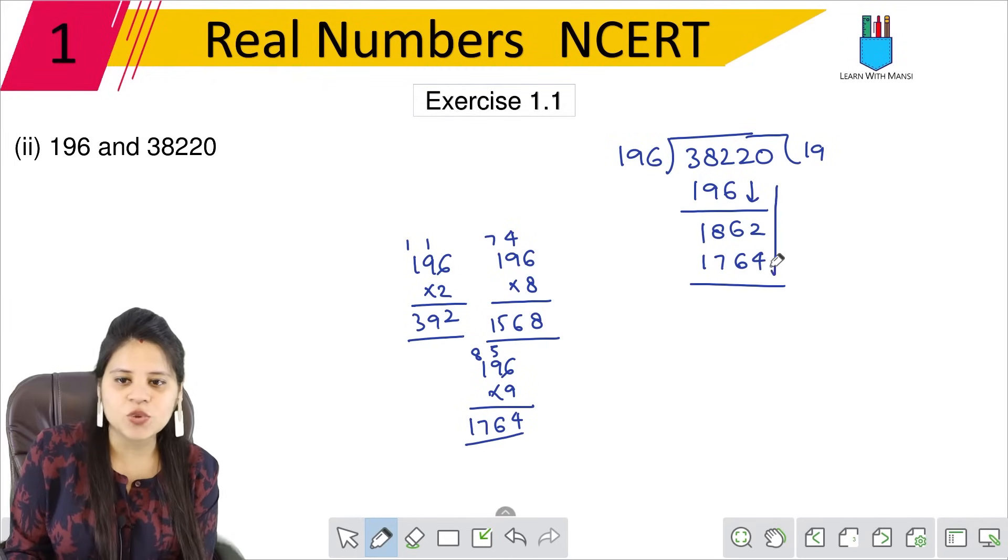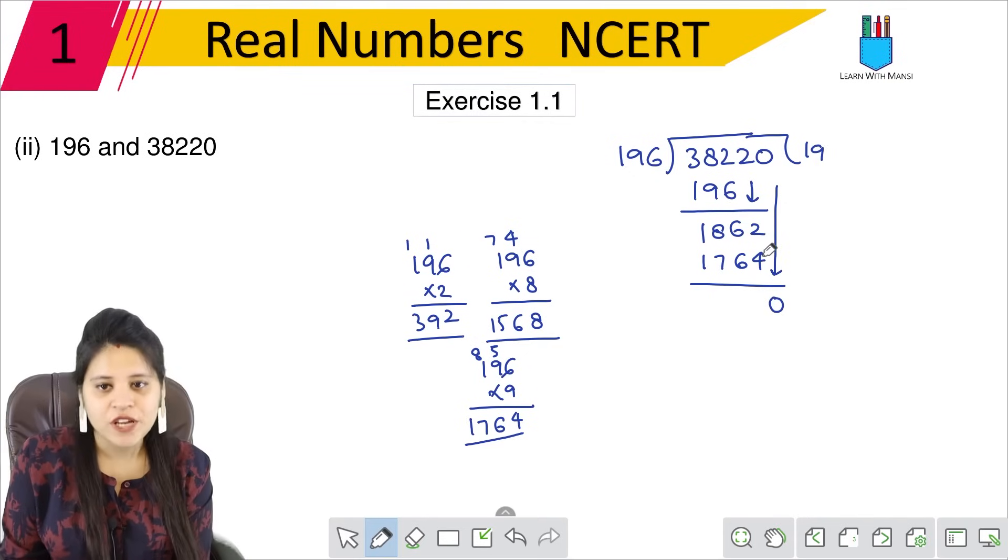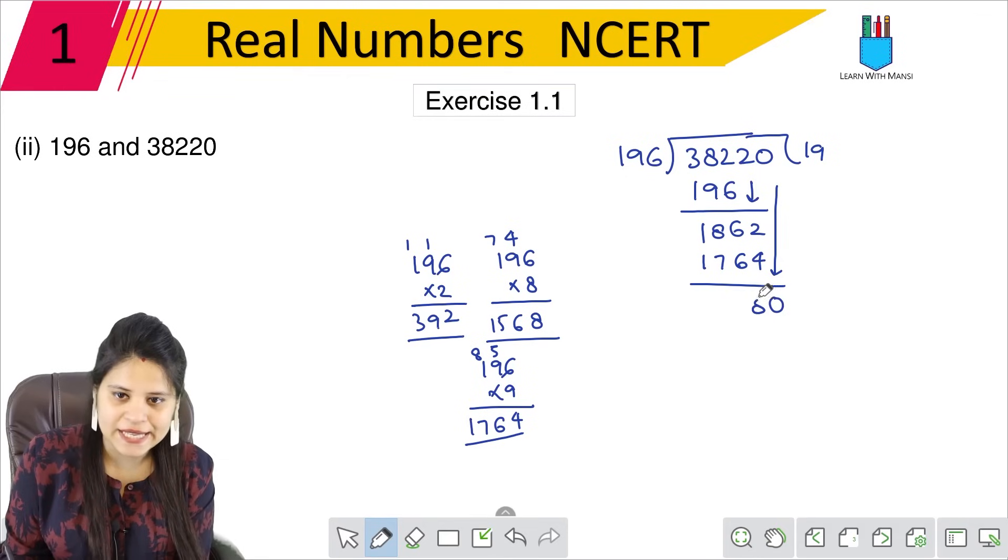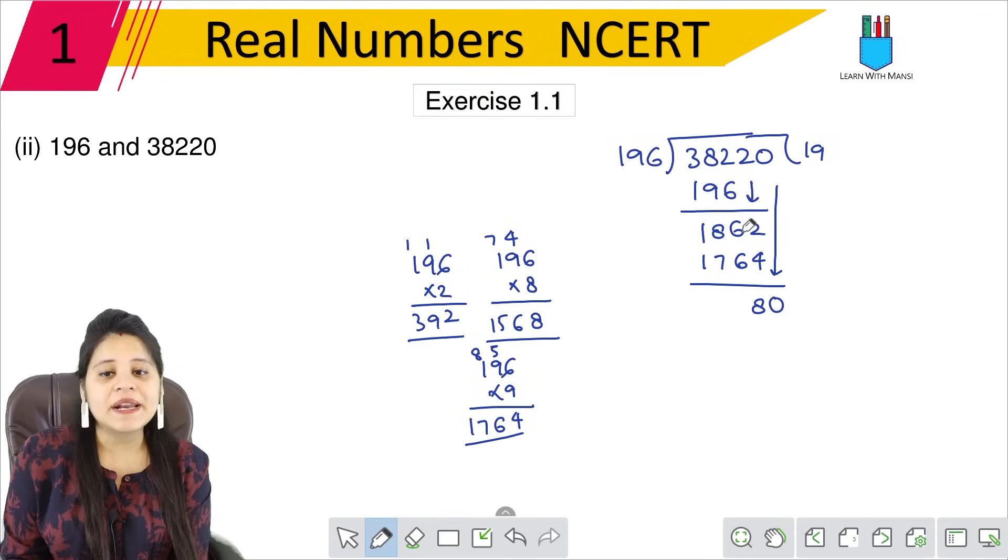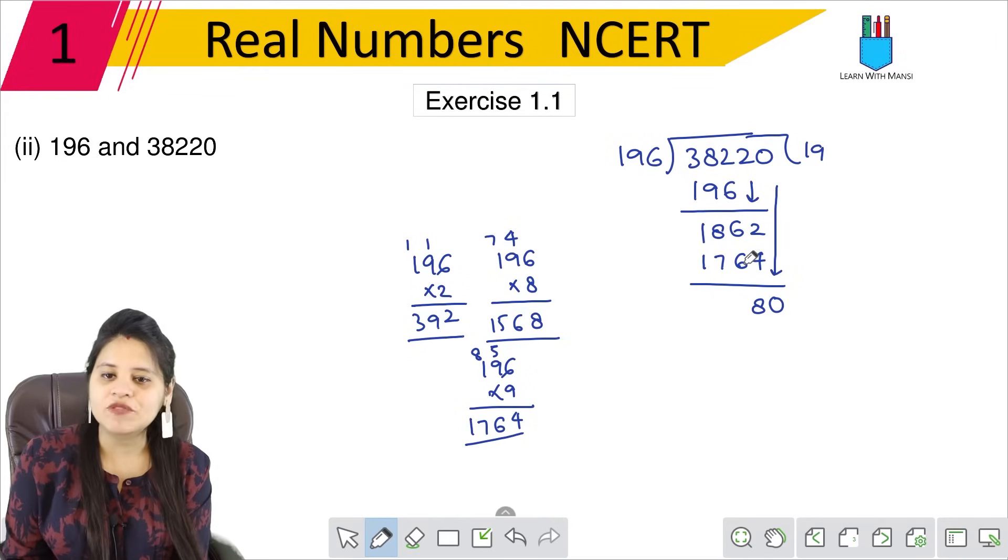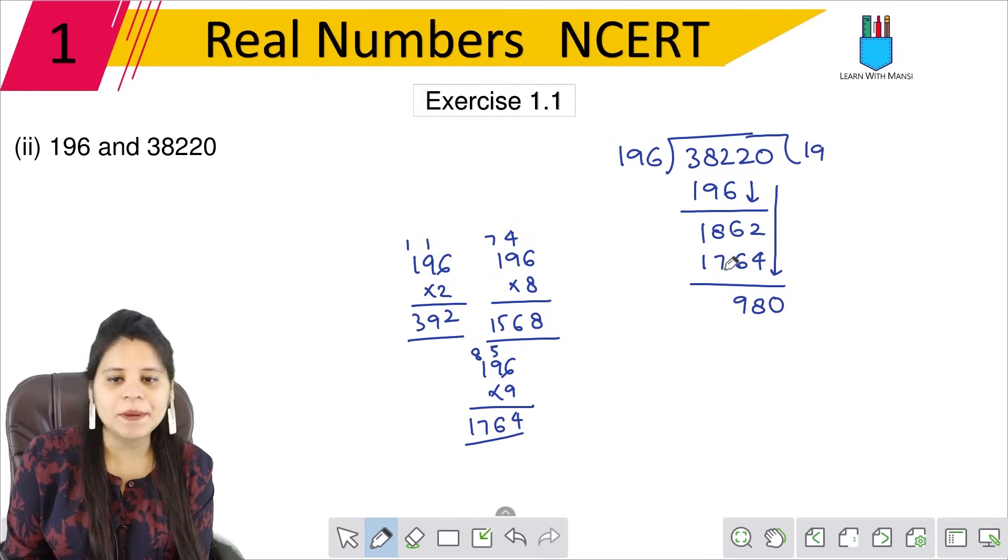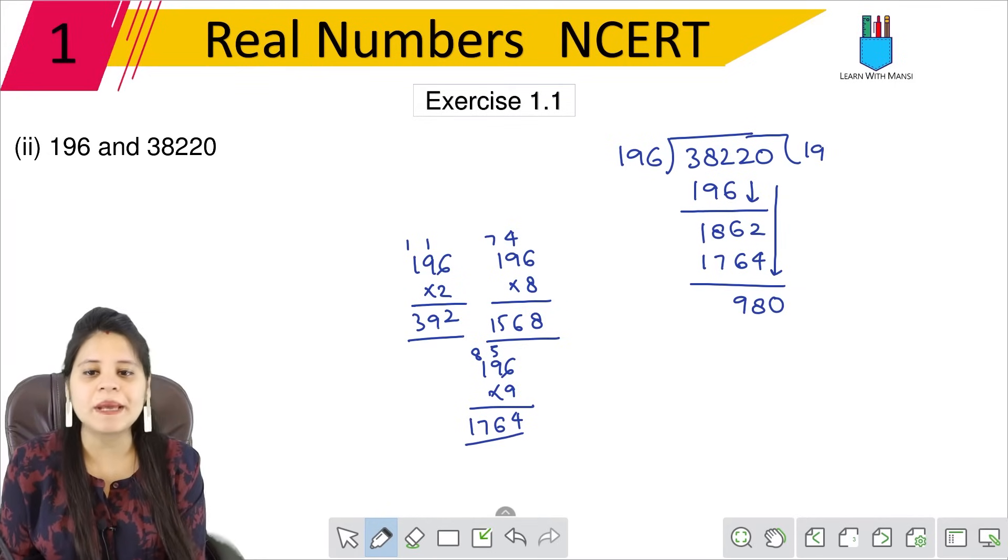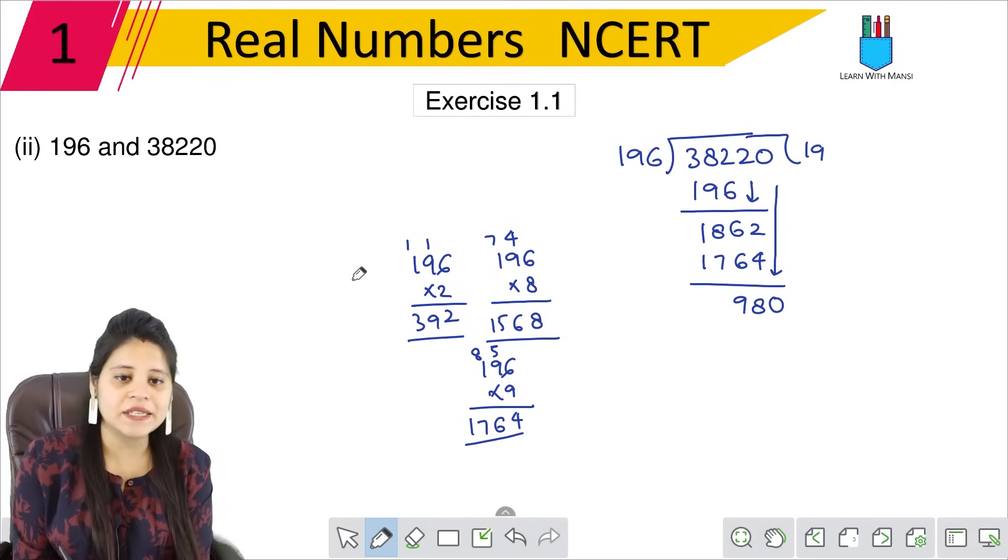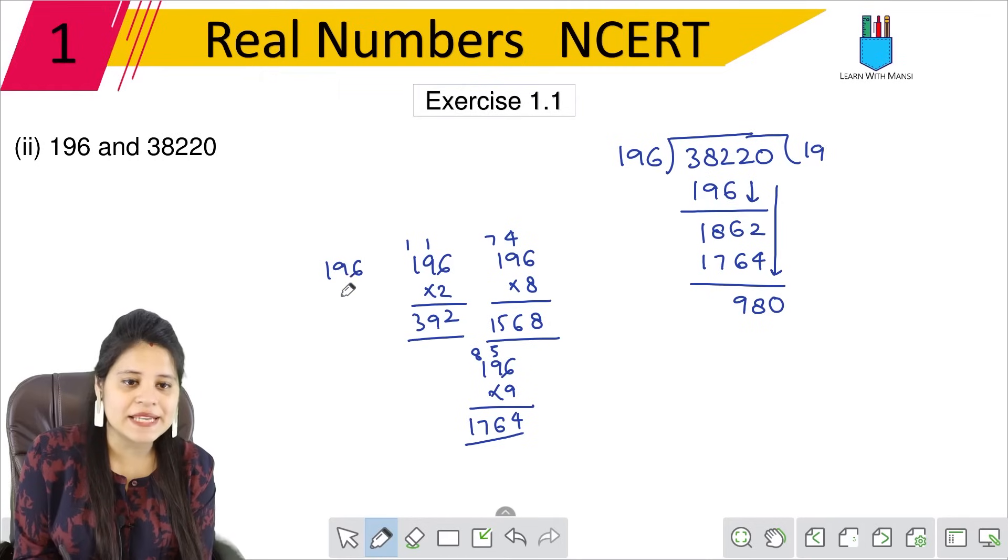Continuing the division, we get 980. Let's see, 196 into 5 gives 980 exactly. So in the first step, we have remainder 0.